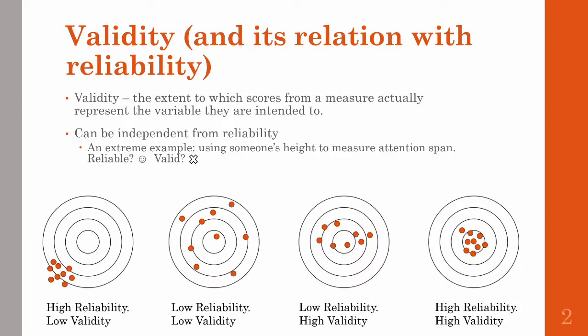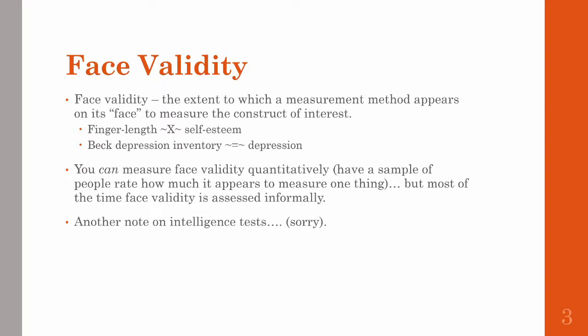The specific types of validity we'll talk about in this video are face validity, content validity, and criterion validity. The first type is face validity, which is the extent to which a measurement method appears on its face to measure the construct of interest. Finger length has nothing to do with measuring someone's self-esteem, and that's why we wouldn't ever use that as a measure — it's just not valid. An example that has good face validity is the Beck Depression Inventory, which, among other things, asks how sad you are and other measures that people have agreed upon are related to and are measuring depression.